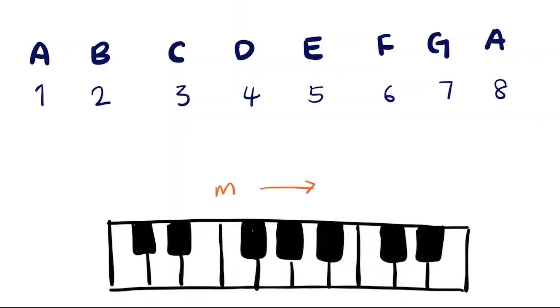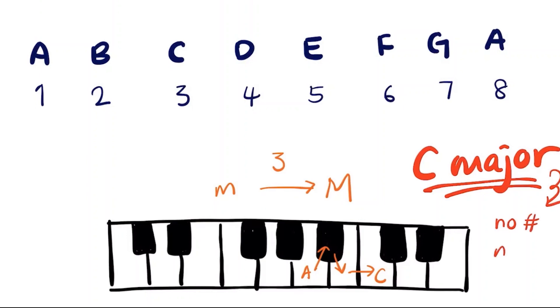We're going to look for the major key from A minor, which means we move three half steps to the right, and we get C major. So C major is the relative major of A minor. From C major, we know there are no sharps or flats in this key.